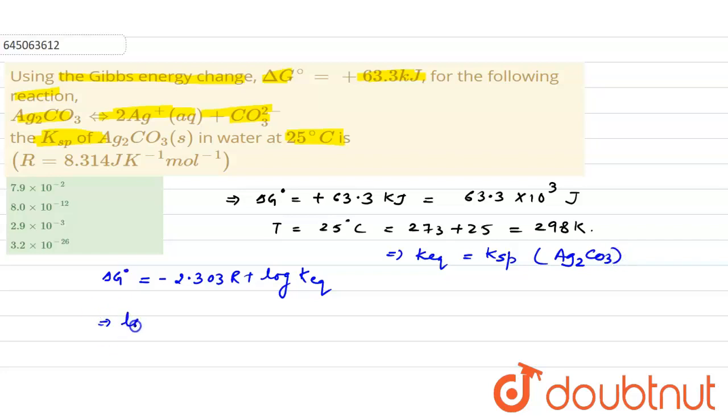We can write down log K_equilibrium, or log Ksp, as delta G divided by -2.303RT.